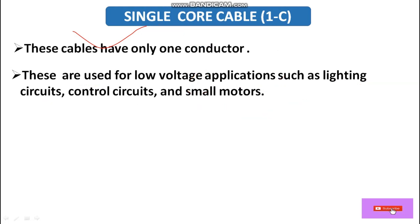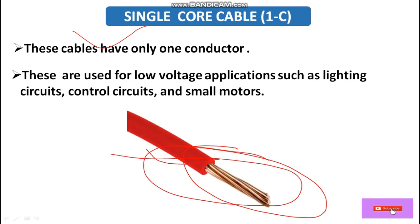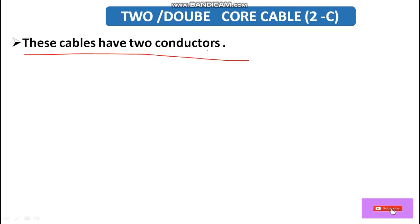This is the view of single core cable — here we have only one conductor. Now come to double core or two core cable. This cable has two conductors; when we have two conductors in one single bundle, it is a two or double core cable.